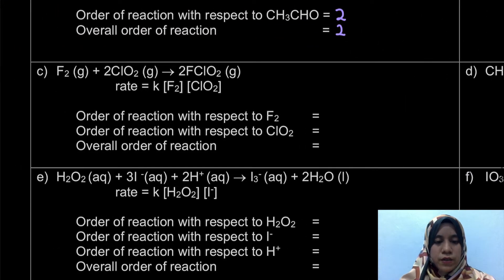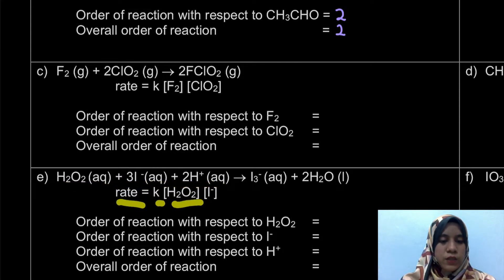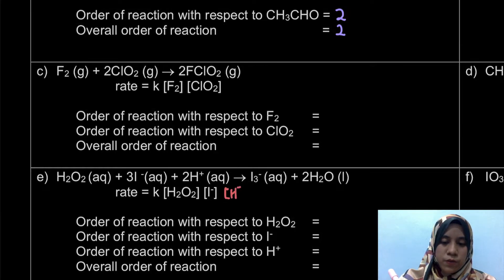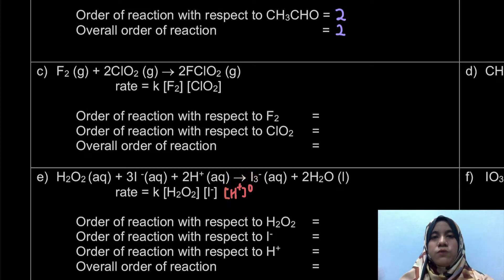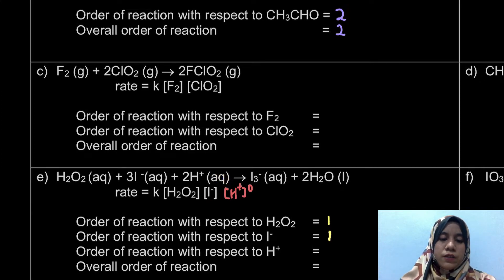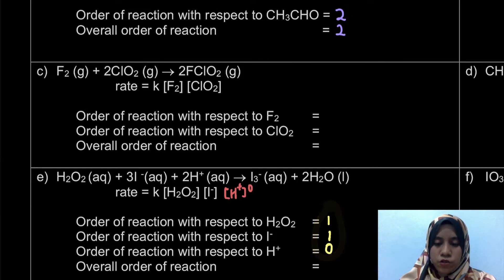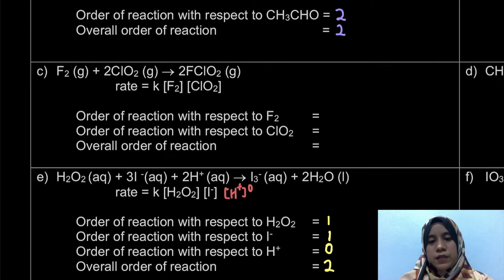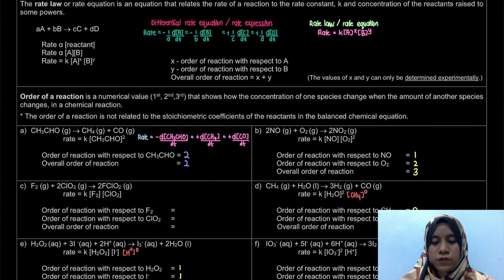For example E, we have H₂O₂ plus 3I⁻ plus 2H⁺. The rate law is rate = K[H₂O₂][I⁻]. H⁺ is not written down in the rate law, meaning H⁺ is raised to the power of 0. The order of reaction with respect to H₂O₂ is 1, with respect to I⁻ is 1, and with respect to H⁺ is 0. Overall order of reaction is 1 + 1 + 0 = 2. That is the order of reaction — always look based upon the rate law.